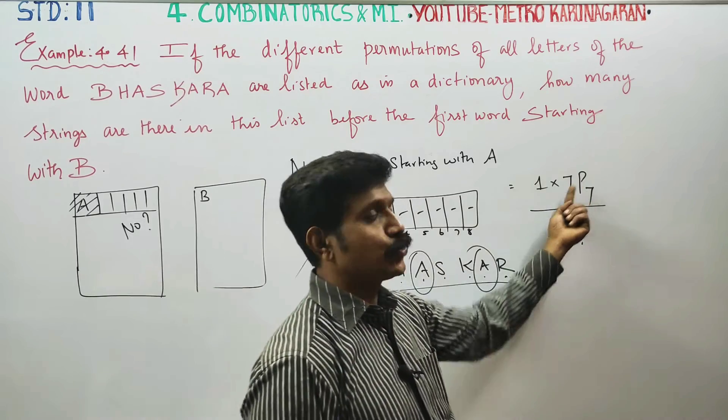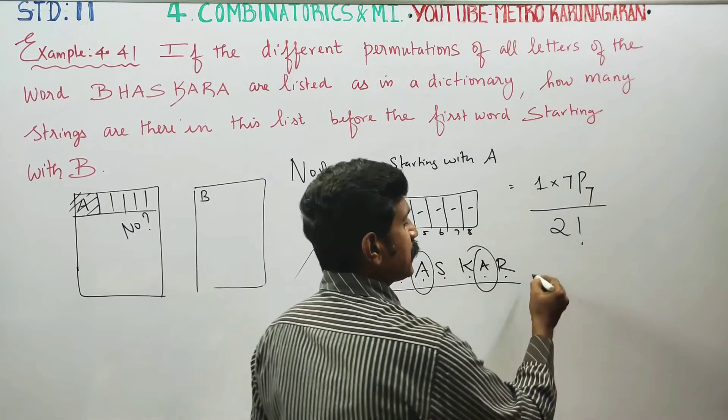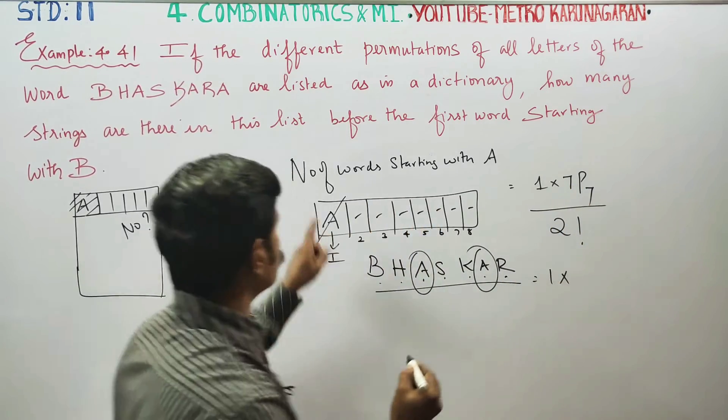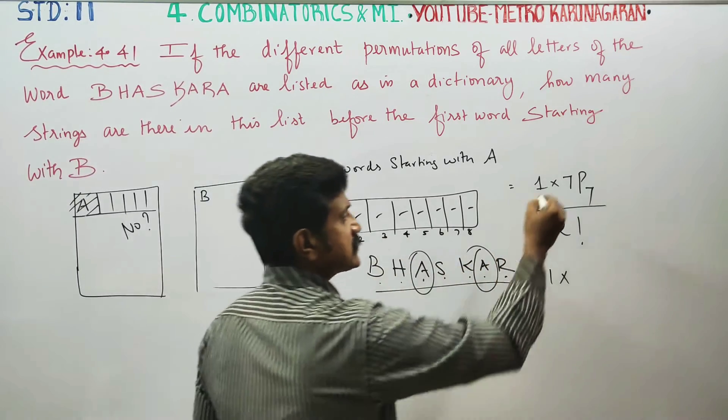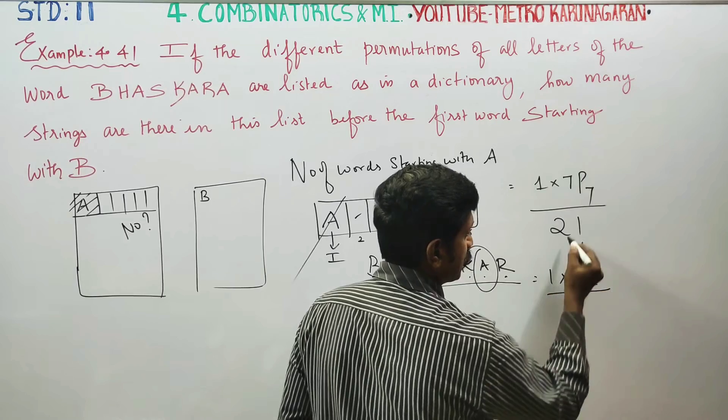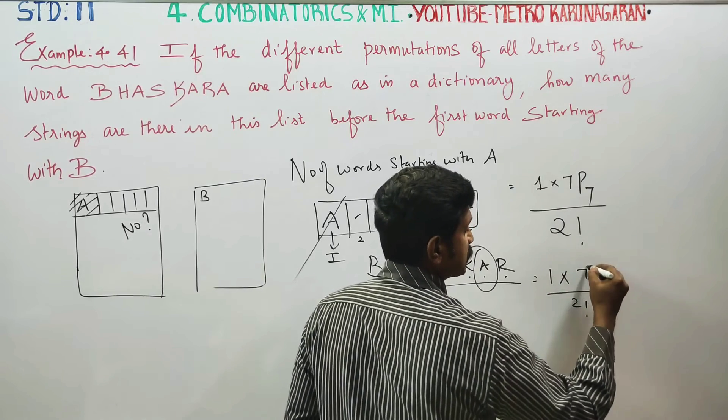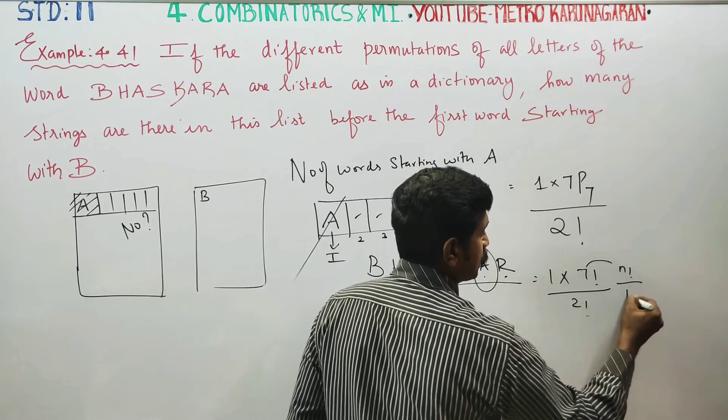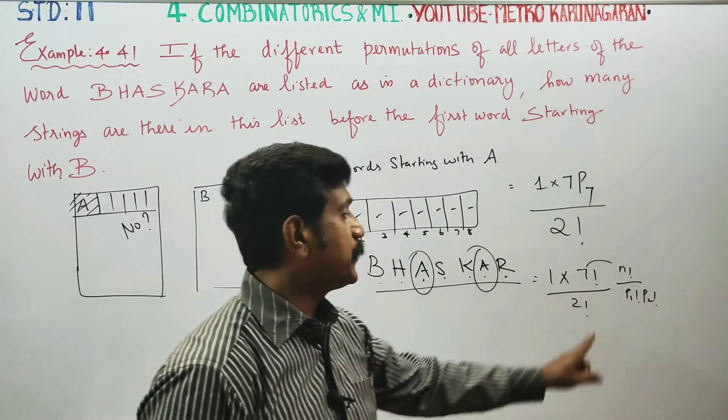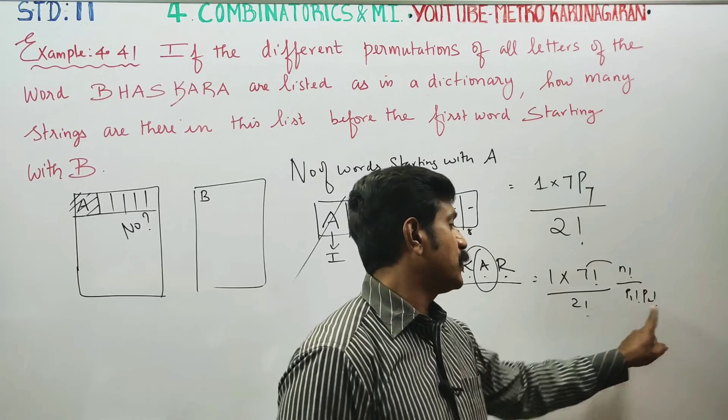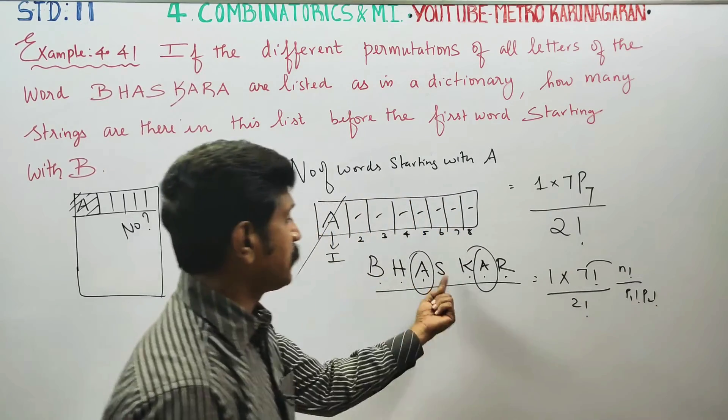The formula is n factorial by p1 factorial. 7P7 is 7 factorial by 2 factorial. N factorial by P1 factorial, P2 factorial - it's for repetition. N factorial is 7 factorial by 2 factorial. What is the repeat? A repeats.